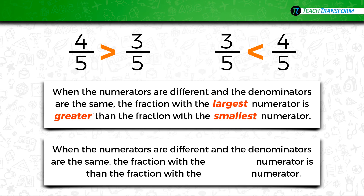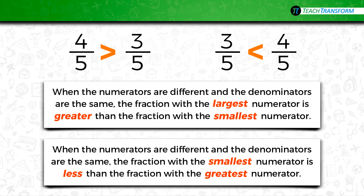You might have filled it out in a different way. When the numerators are different and the denominators are the same, the fraction with the smallest numerator is less than the fraction with the greatest numerator. So if you're going to use these words, you have to have smallest, less, and greatest in that order on your sheet. If you have something wrong, go ahead and correct it now. You can pause the video if you need to do that.